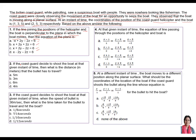Part two: If the Coast Guard decides to shoot the boat at the given instant of time, then what is the distance in meters that the bullet has to travel? That means you have to find the distance between the two given points.